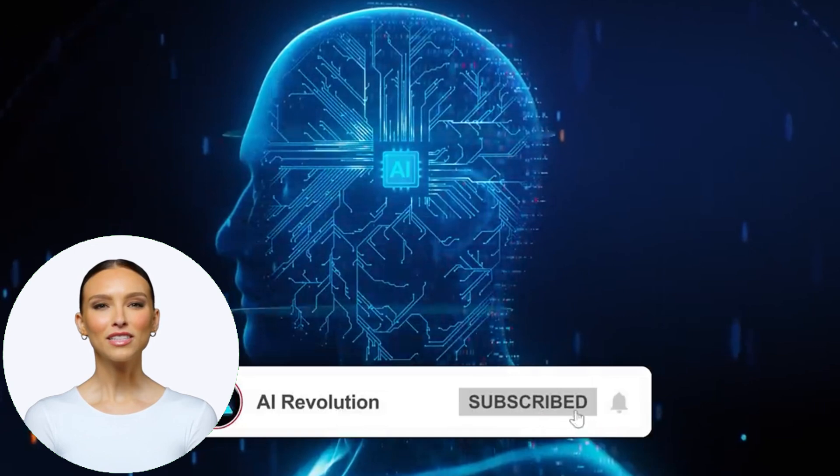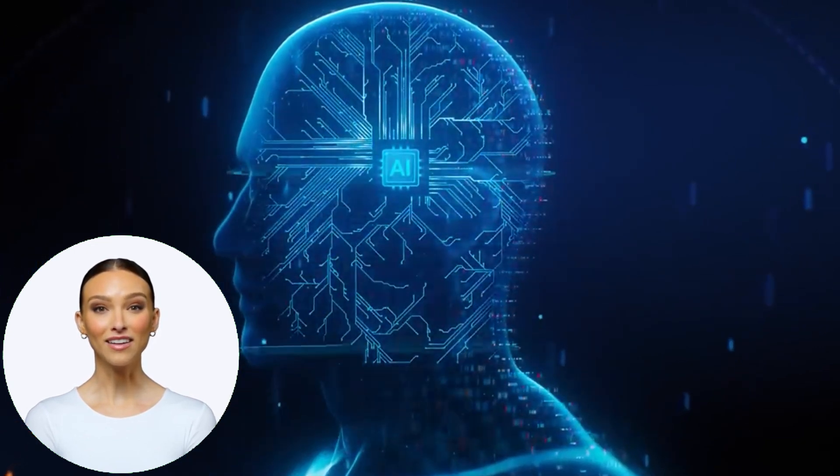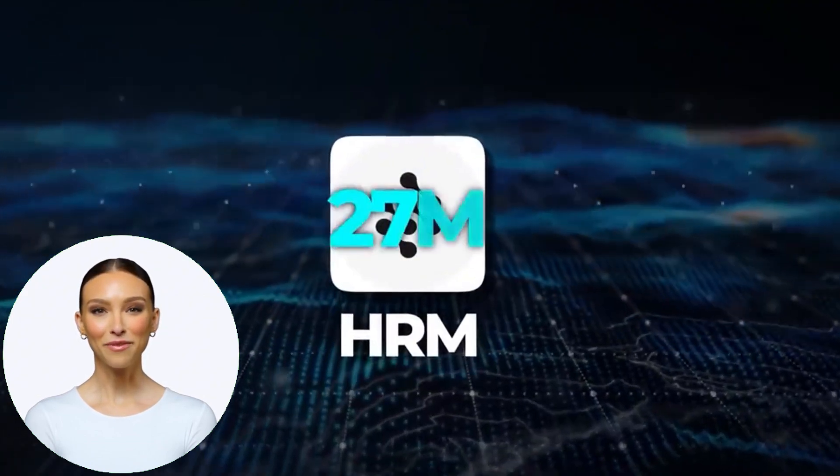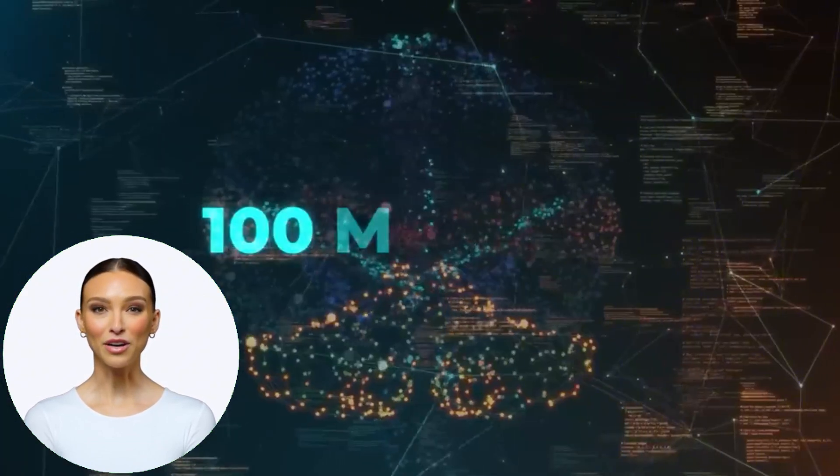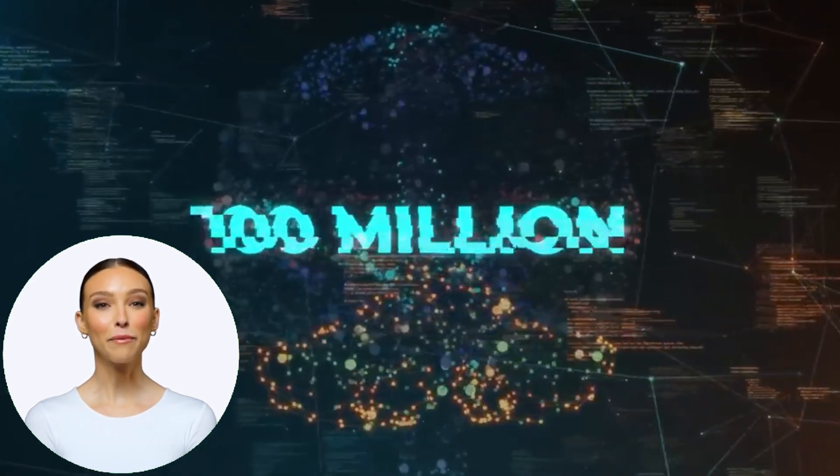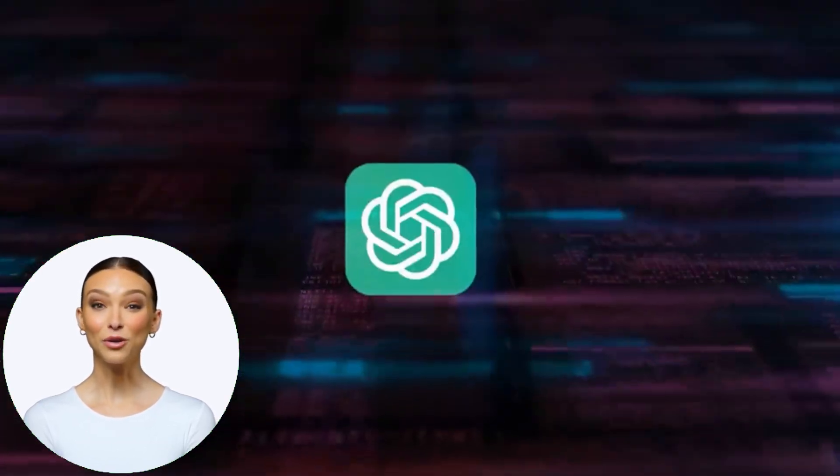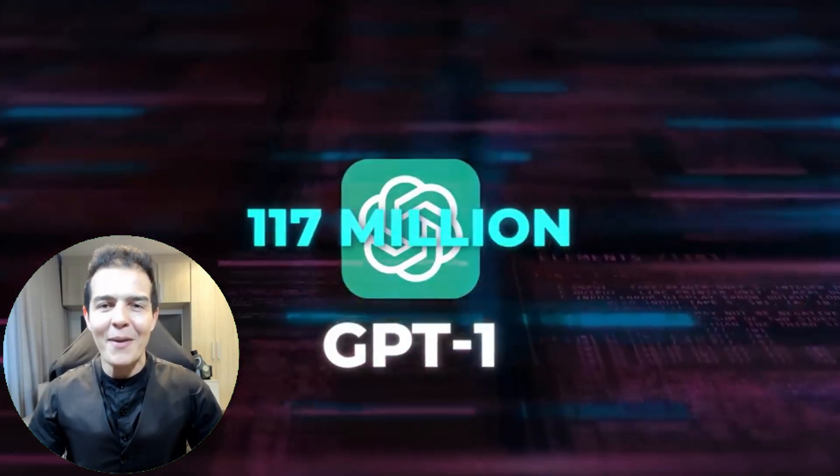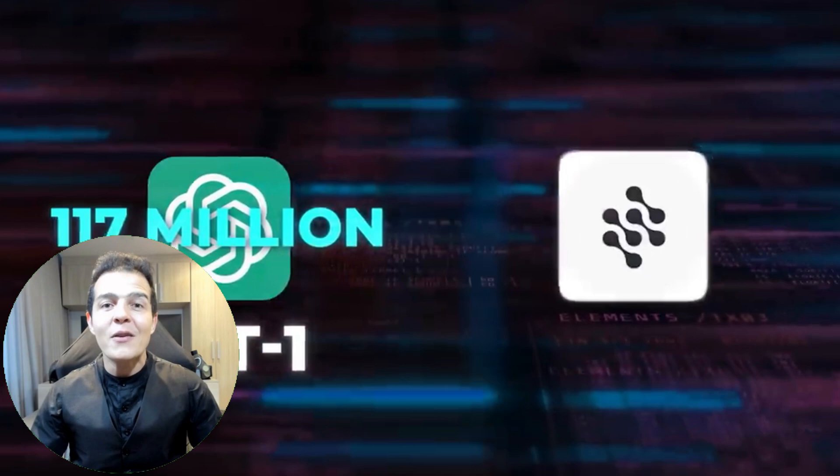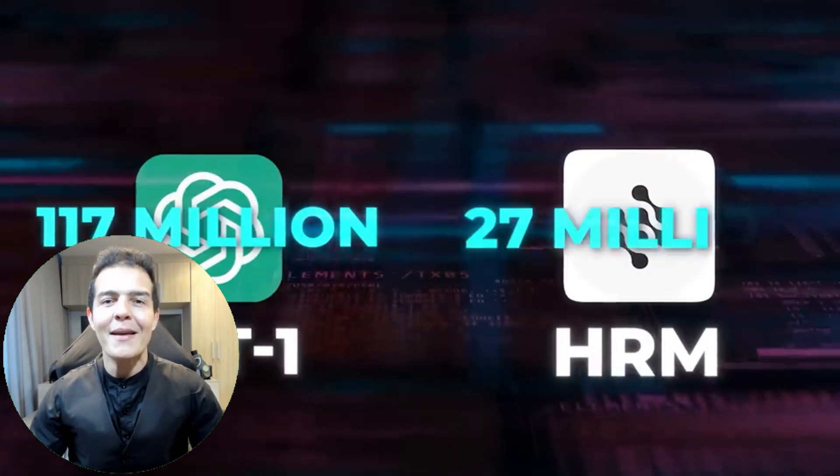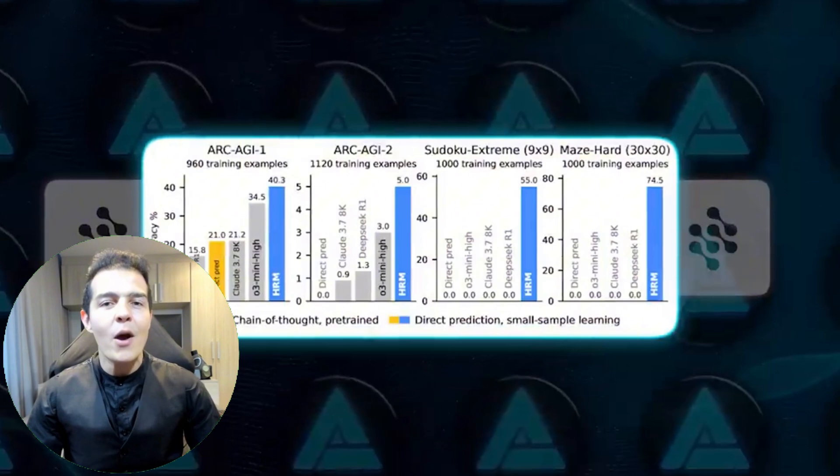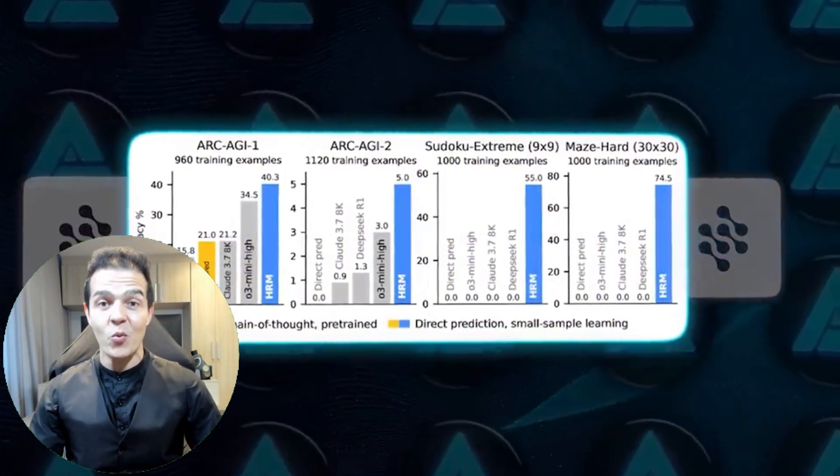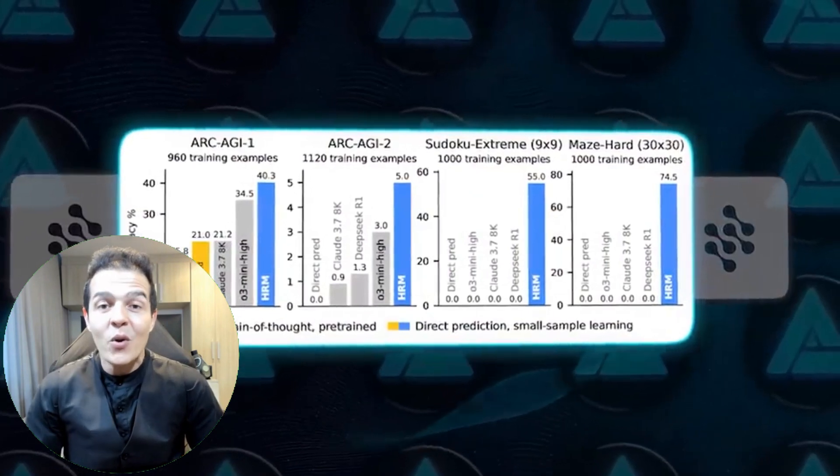And look, before you think this is just another tiny model beats GPT headline, this one actually holds up. The HRM isn't a scaled-down LLM. It's not a simplified transformer. It's something totally different that mimics the brain, and not in that generic neural network way. It literally borrows the brain's layered decision-making strategy and applies it to artificial intelligence reasoning. And because of this architecture, a model with just 27 million parameters surpasses models with over 100 million, or even billions.